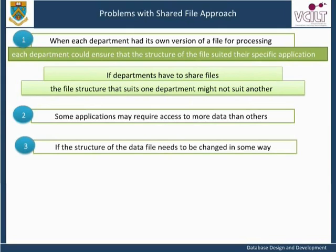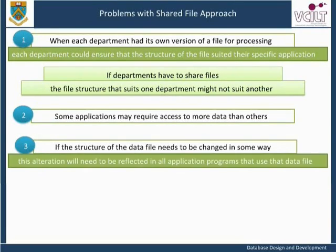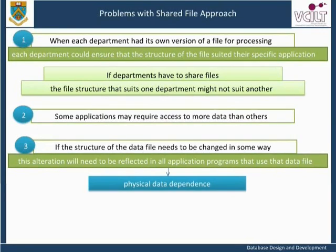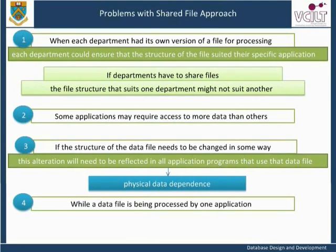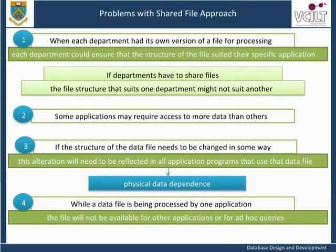If the structure of the data file needs to be changed in some way, for example to reflect a change in currency, this alteration will need to be reflected in all application programs that use that data file. This problem is known as physical data dependence and will be examined in more detail later in the unit. While a data file is being processed by one application, the file will not be available for other applications or for ad hoc queries.